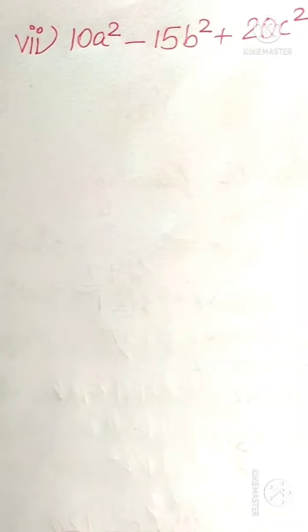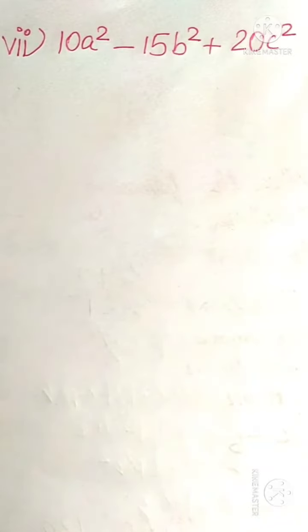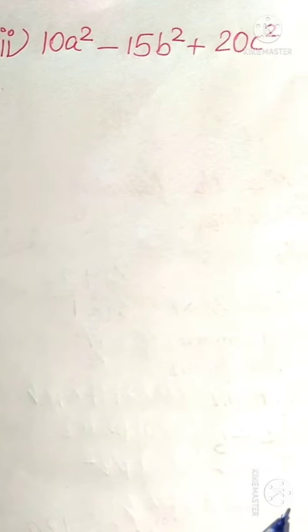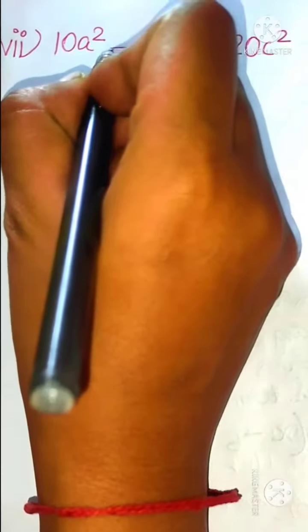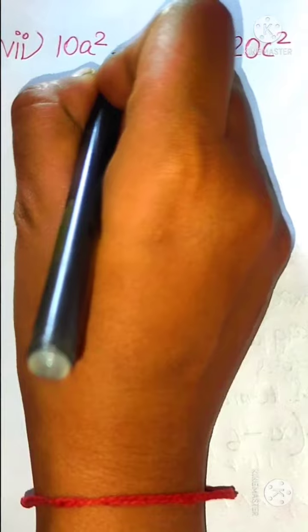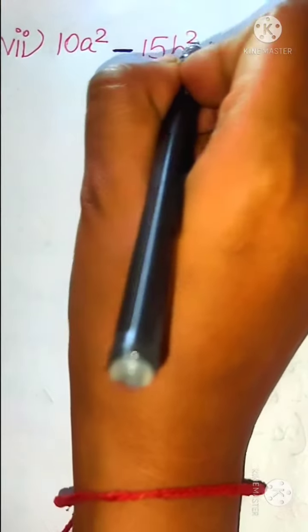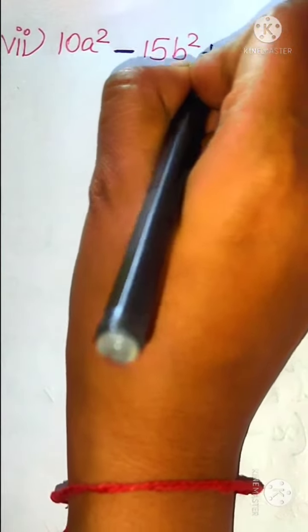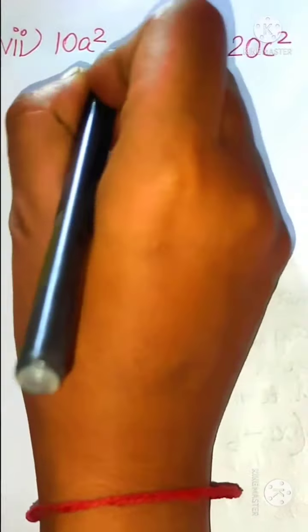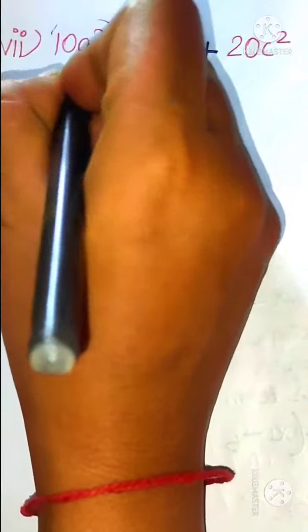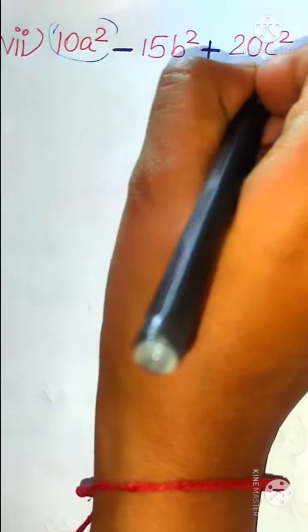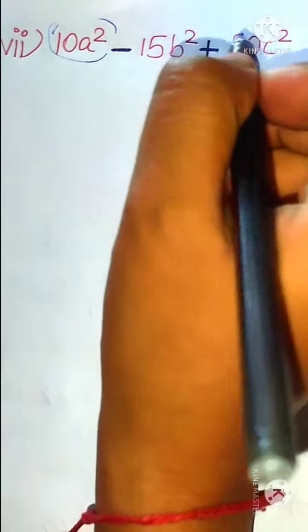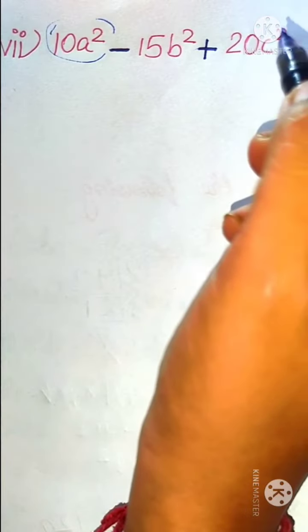Now let's start with the next sum. Here we have 10a square minus 15b square plus 20c square. The minus and plus symbols are separators, so here we have both minus and plus. So we have three terms: 10a square, 15b square, and 20c square.